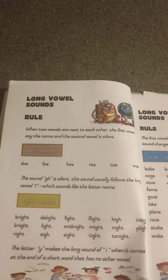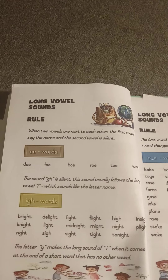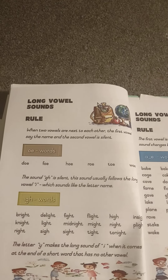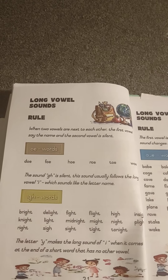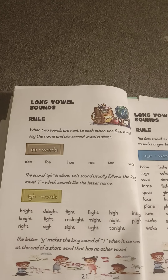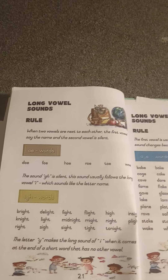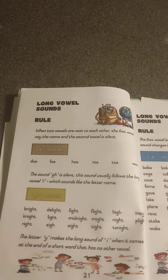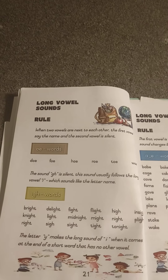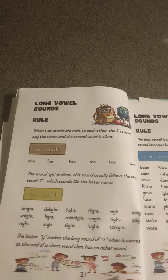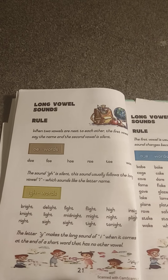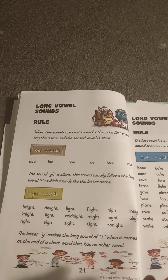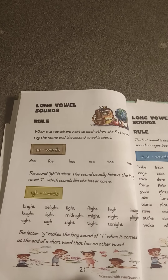When two vowels are next to each other, the first vowel says its name and the second vowel is silent. For example with the vowel O: DO, FO, HO, RO, TO, VO — in these words, only the O sound is heard. The sound GH is silent. This silent GH usually follows the long vowel I, which sounds like the letter name.